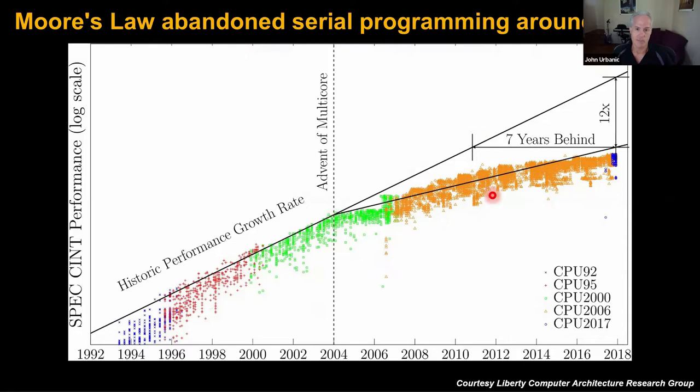If we look at this benchmark performed over the years on a variety of popular processors, you'll notice that right around the year 2004 things really dropped off. This is a logarithmic graph, so this is a big steep drop-off. Prior to that, Moore's Law — basically improvements in hardware — meant that computer speeds doubled every couple of years for a typical laptop but also for a supercomputer. Right around 2004, things quit improving quite so much.